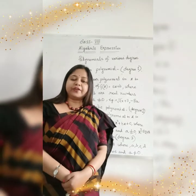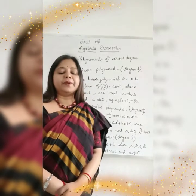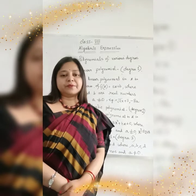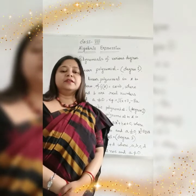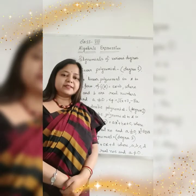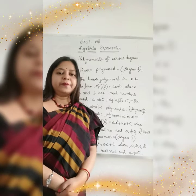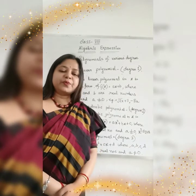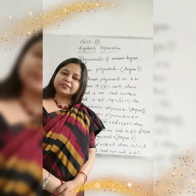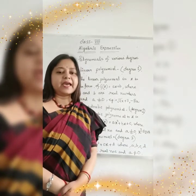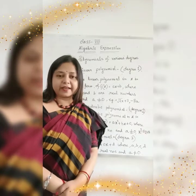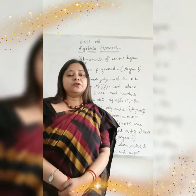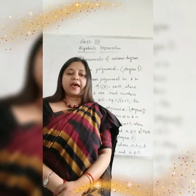Our third one is cubic polynomial. As we have already discussed linear and quadratic, you may have understood what is the meaning of cubic polynomial. In the cubic polynomial, the variable has maximum power 3. That means the expression will be written as ax cube plus bx square plus cx plus d. In this expression, x has the highest power of 3, and a, b, c and d are real numbers and a is not equal to 0.